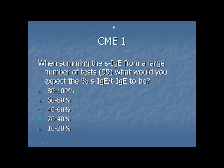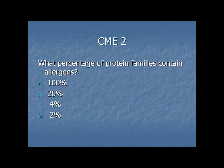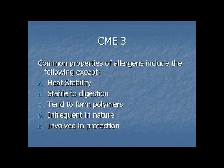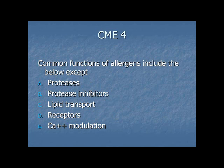I have a couple of CME questions. First: when summing the specific IgE from a large number of tests — say 99 specific IgE tests — what would you expect the percent of specific IgE over total IgE to be? Second: what percent of protein families contain allergens, out of all the proteins we know about? Third: common properties of allergens include the following except — heat stability, stable to digestion, tend to form polymers, infrequent in nature, or involved in protection. Fourth: common functions of allergens include the following except — protease inhibitors, lipid transport, receptors, or calcium modulators.